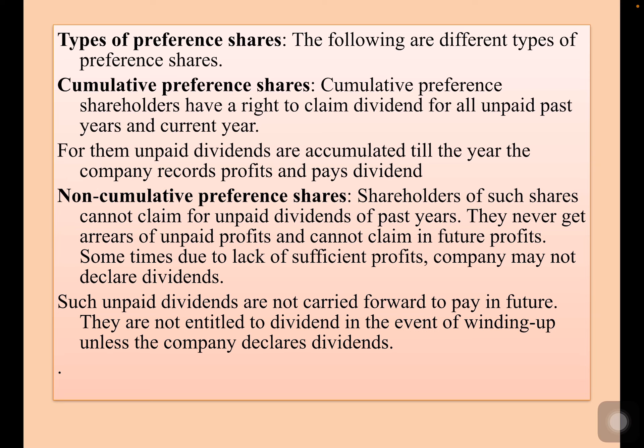For cumulative preference shareholders, unpaid dividends are accumulated till the year the company records profits and pays dividend. Non-cumulative preference shares: the shareholders of such shares usually cannot claim for unpaid dividends of past years. They never get arrears of unpaid profits and cannot claim in future profits.